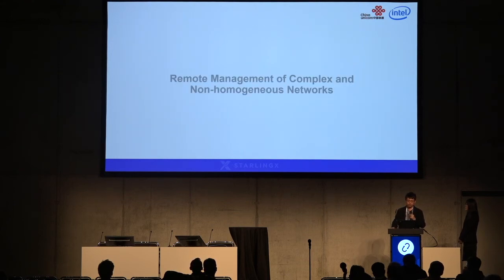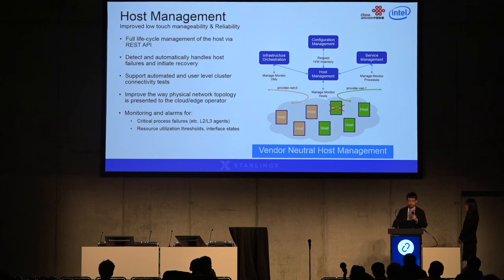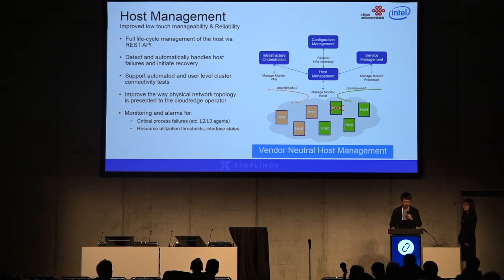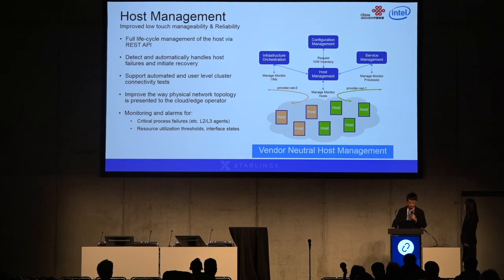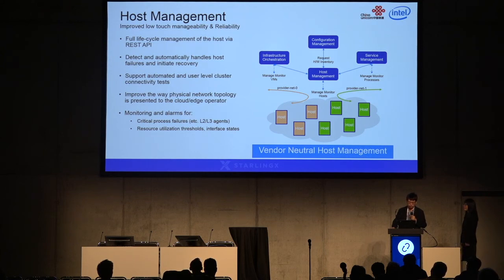The next requirement StarlingX is trying to fill is remote management of complex and non-homogeneous networks. StarlingX is introducing a host management component which provides full lifecycle management of the host via REST API. The first benefit is that it can detect and automatically handle failures and initiate recovery of your host. It also supports automated and user-level cluster connectivity tests so that your edge operator can easily find where the failure is from. It also improves the way the physical network topology is presented to your edge operator — for example, which parts of your hosts are connected to which external physical infrastructure — all providing improved low-touch manageability of your edge side.